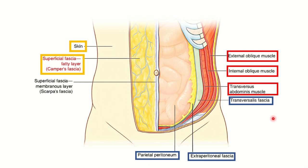This picture shows all eight layers of the anterior abdominal wall. First is the skin, then superficial fascia, which is divided into two parts: the superficial fatty layer called fascia campers, and the membranous layer called Scarpa's fascia. There is no deep fascia. Then the three muscles: external oblique, internal oblique, and transversus abdominis. Then fascia transversalis — the fascia of the transversus abdominis muscle — followed by extraperitoneal tissue and parietal peritoneum.